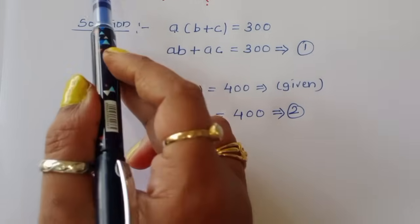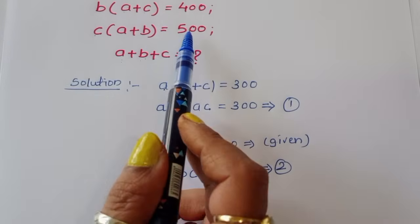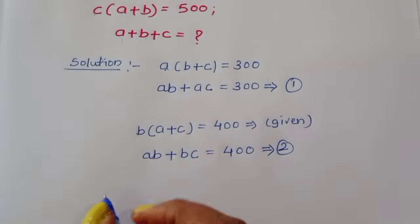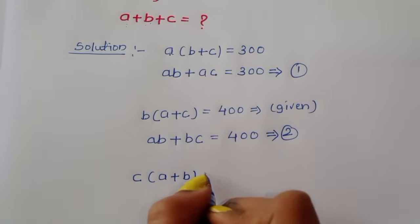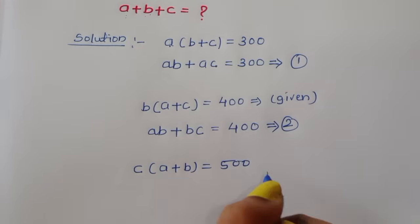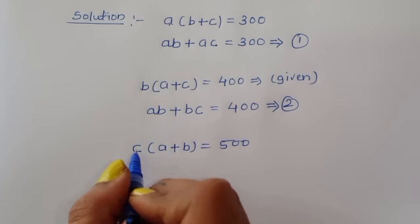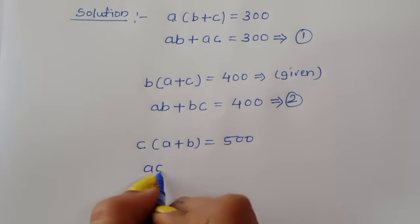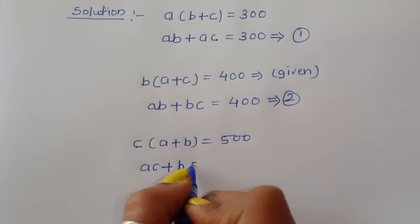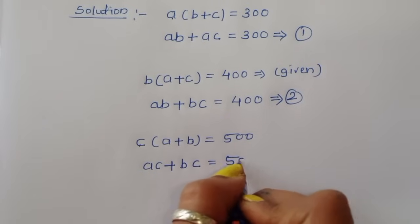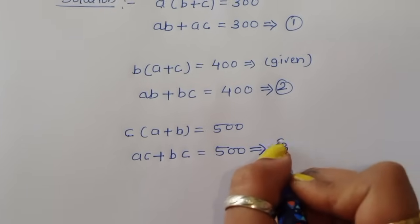The last equation is C times A plus B is equal to 500. Expanding, we can write AC plus BC is equal to 500. This is equation number 3.